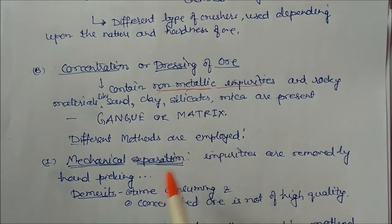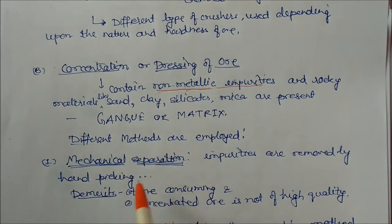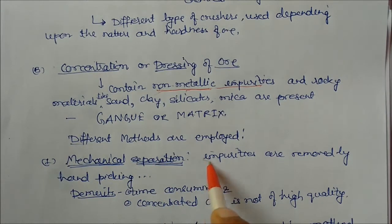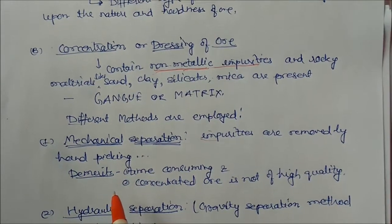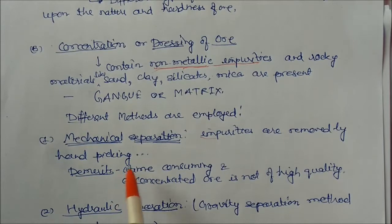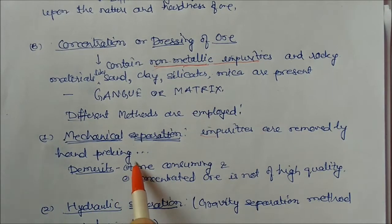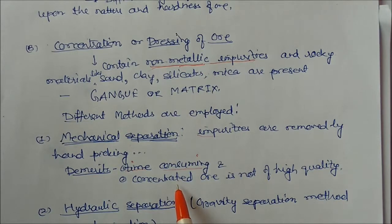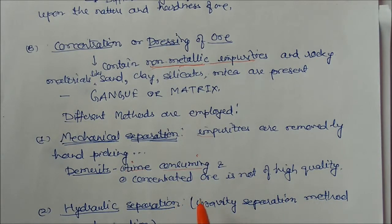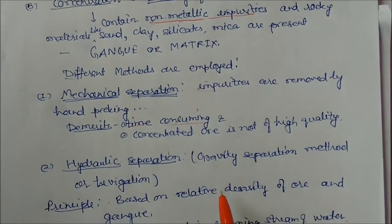One method is called mechanical separation or hand picking, where impurities are removed by hand. The main demerit of this method is that it is time consuming and the concentrated ore obtained is not of high quality, so this method is not commonly used.